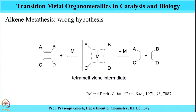The next mechanism was proposed by Roland Petit in 1971, which spoke about the presence of a tetramethylene intermediate bound to the metal — four methylene groups at four corners forming a tetramethylene-metal-bound intermediate, resulting in the desired metathesis product. However, this mechanism also lost support later because of lack of evidence and was proven to be not true. There was another mechanism proposed by Grubbs involving a metallocyclopentane intermediate, which was also proven to be incorrect.